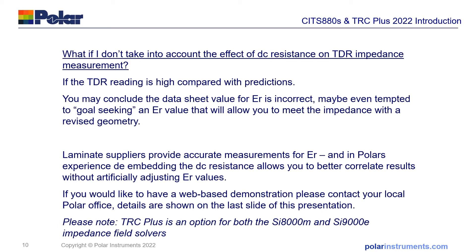If you don't take into account the effect of DC resistance on TDR impedance measurements, you may find the TDR reading appears high compared with predictions. Some fabricators have drawn the conclusion that the data sheet value for epsilon r is incorrect and may even be tempted to goal-seek an ER value to meet the impedance with a revised geometry. However, laminate suppliers provide accurate measurements for dielectric constant, and de-embedding the DC resistance allows you to better correlate results without artificially adjusting ER values, which can lead to quite unusual conclusions.